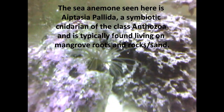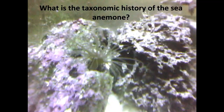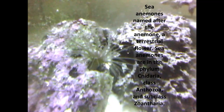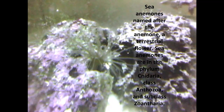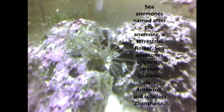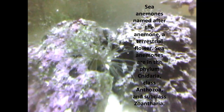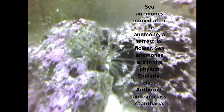What is the taxonomic history of the sea anemone? Sea anemones are named after the anemone, the terrestrial flower. Sea anemones are in the phylum Cnidaria, class Anthozoa, and subclass Zoantharia.